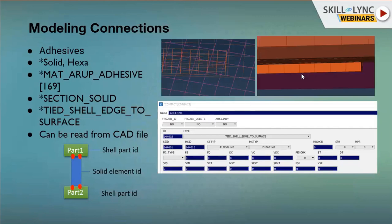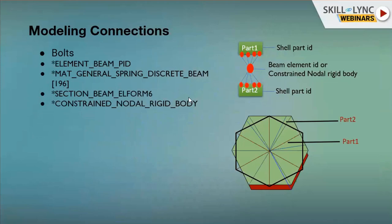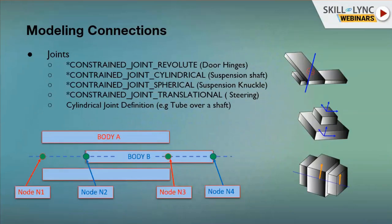Adhesive is similar to spot welds but instead of one element you have a row of elements. You get the curve information from CAD, convert the curve into adhesive lines, and realize them with the appropriate contact and material information. For bolts, part one and part two are defined, you select the hole nodes in each part, and connect the two parts using either a beam element or constrained nodal rigid body. This is how bolts are represented in the CAE model.